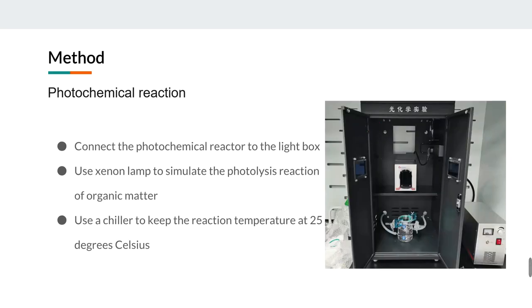Connect the reactor to the chiller to make sure the reaction proceeds at 25 degrees Celsius. After locating the reactor, turn on the sunlight simulator to carry out the photolysis reaction.